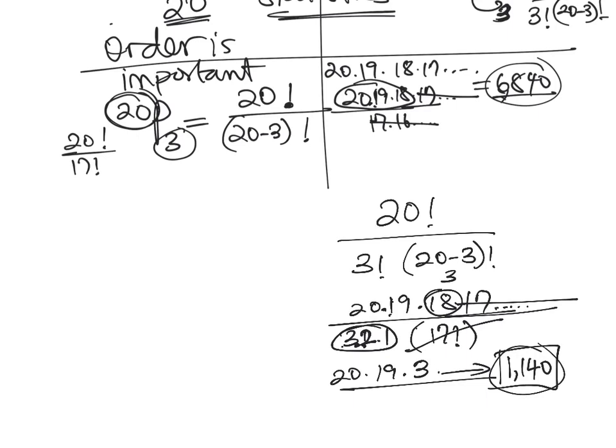Notice with permutations, when the order is important and repetition is allowed, so if you have n permutation r, you will have that first number, 6,840. If we had 20 permutation 3. And if we have 20 combination 3, using our formula, we will have a different answer. So with order, order is important with permutation. It is not important with combination.